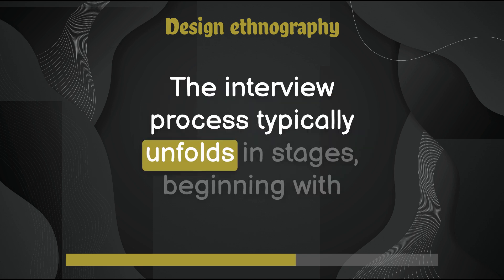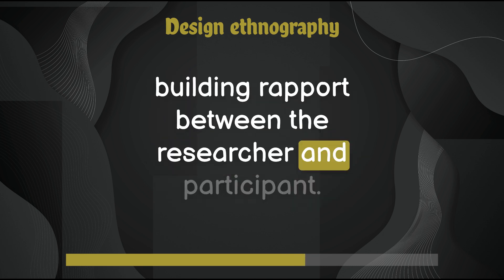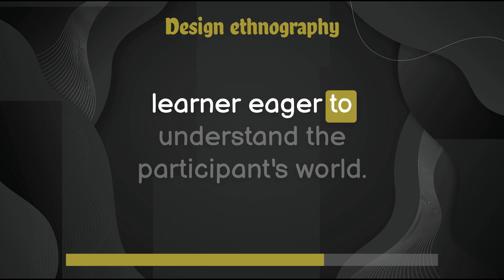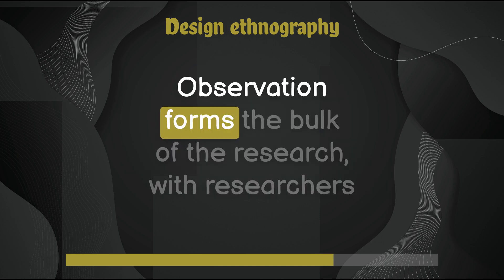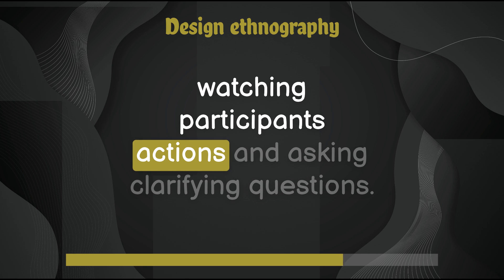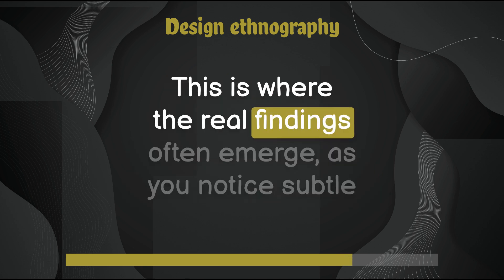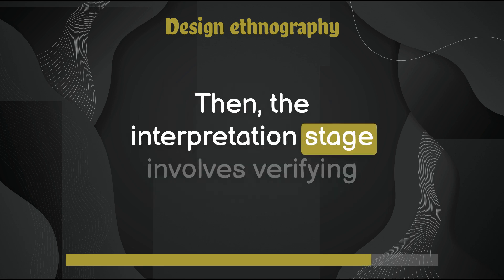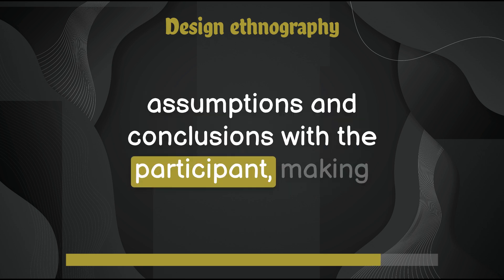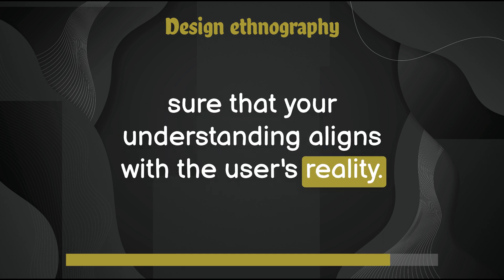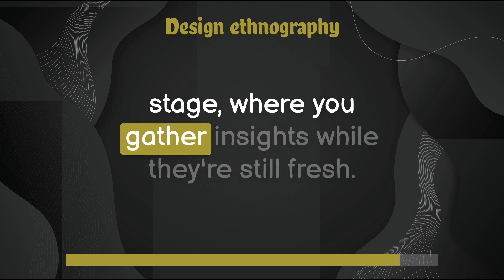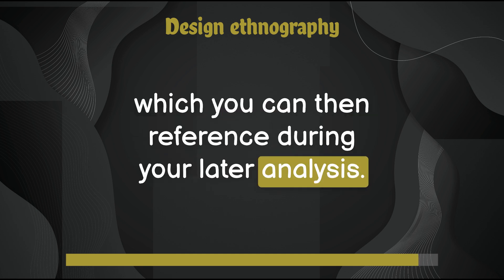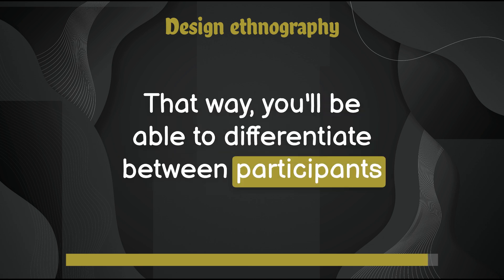The ethnographic interview is a cornerstone of this research approach, and its success hinges on conducting it in the user's natural environment. The interview process unfolds in stages: first, building rapport between the researcher and participant. This is followed by a transition to a master-apprentice model, where the researcher positions themselves as a learner eager to understand the participant's world. Observation forms the bulk of the research — watching participants' actions and asking clarifying questions, noticing subtle behaviors and workarounds they may take for granted. The interpretation stage involves verifying assumptions with the participant. Finally, the summarization stage captures insights while they're still fresh, often using index cards to differentiate between participants and preserve immediate impressions.